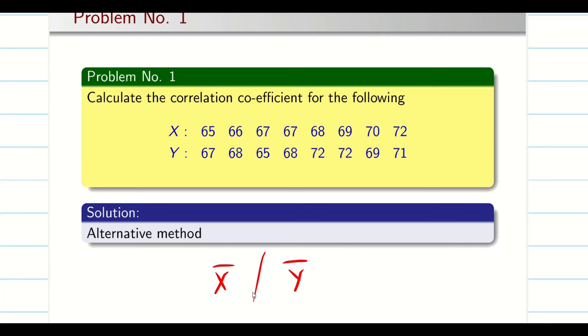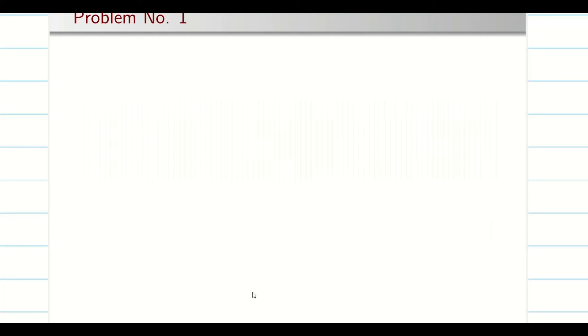Because when we find x bar and y bar, they are the averages. Sometimes they might be decimals. So it is very tough to do all the computations. If you do one small error, it leads to total damage in your correlation coefficient value. So let us see. But anyway, you can learn this method.